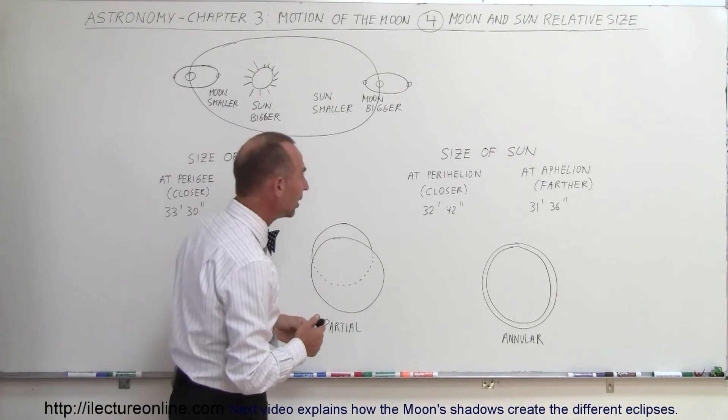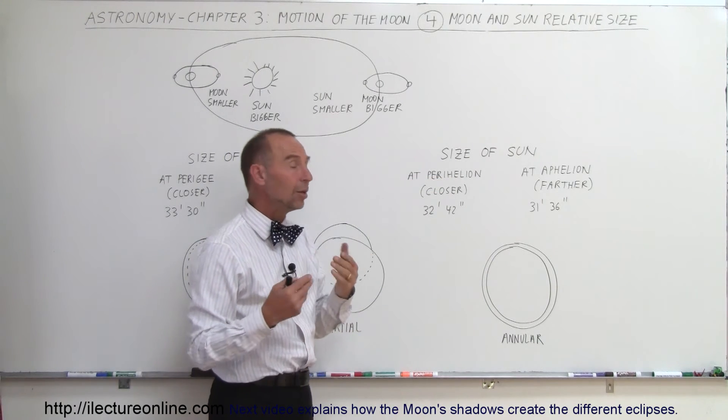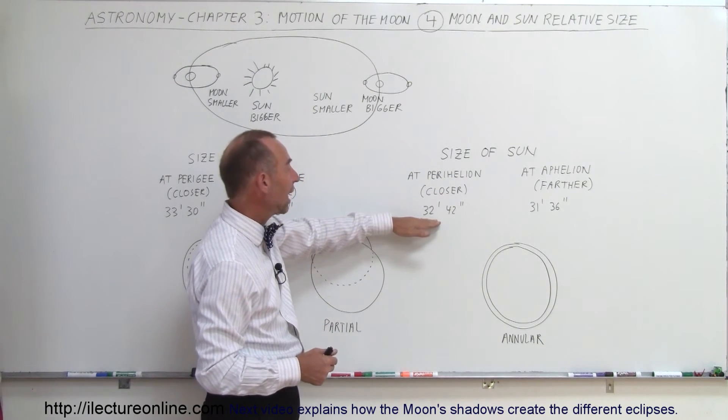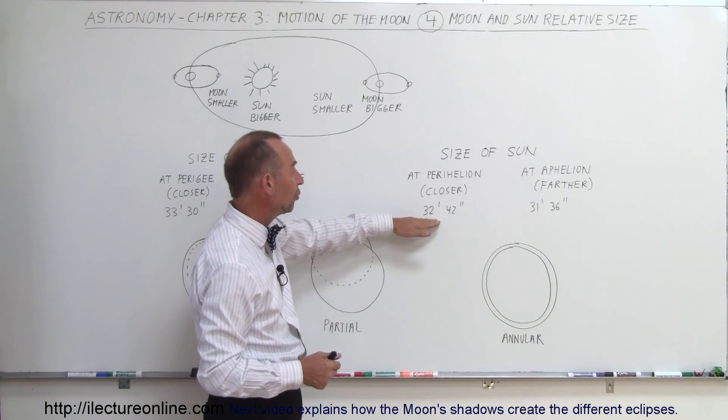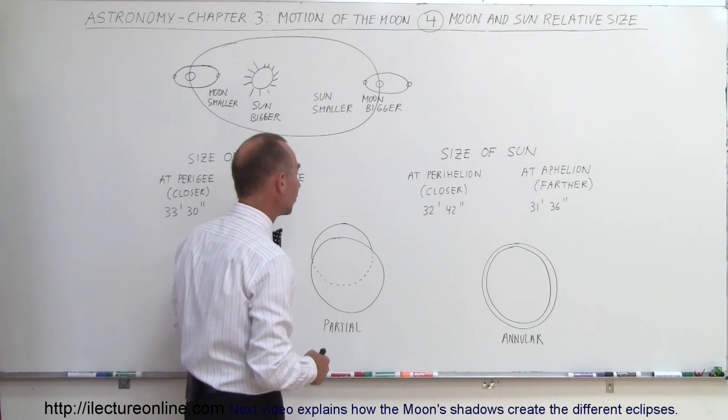The Sun's disk is actually a little bit smaller at its largest. At perihelion, when the Earth is the closest to the Sun, then you can see that the size of the disk is 32 minutes and 42 seconds, so it's smaller than the larger size of the Moon's disk,